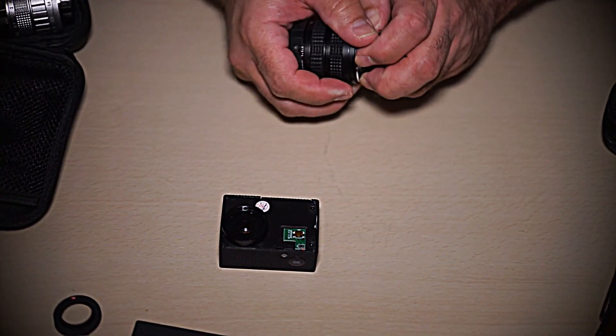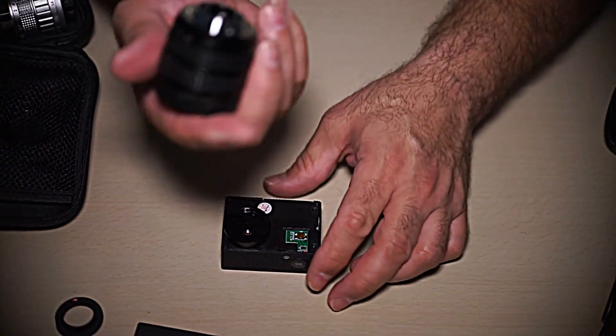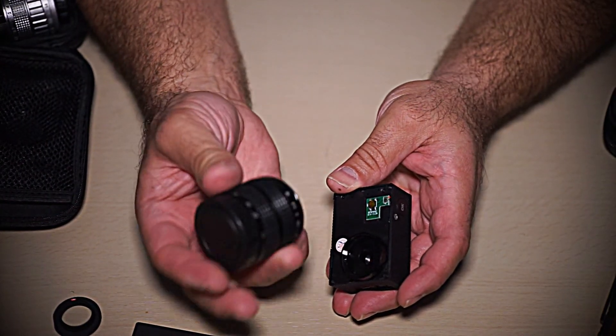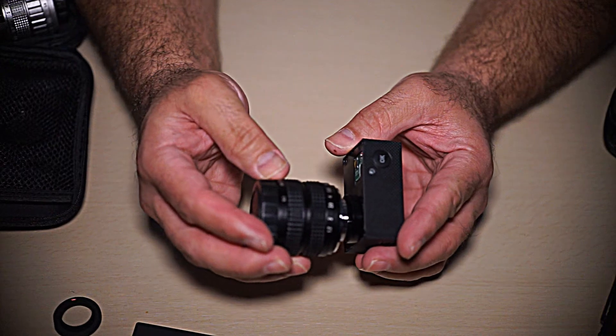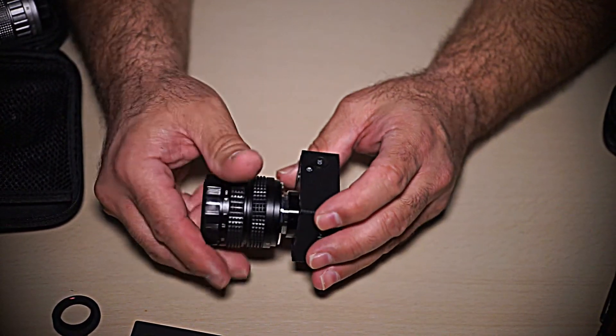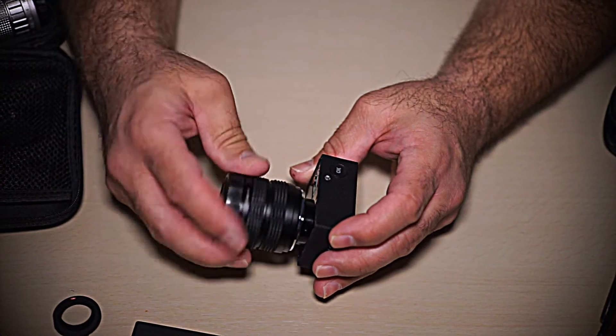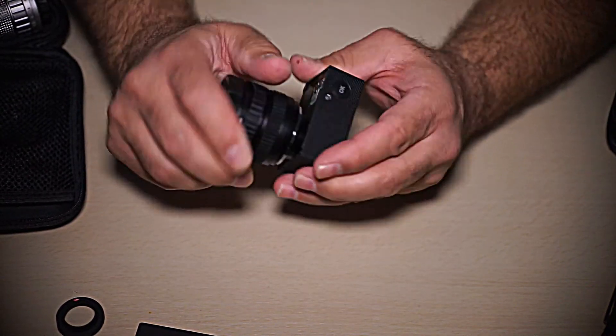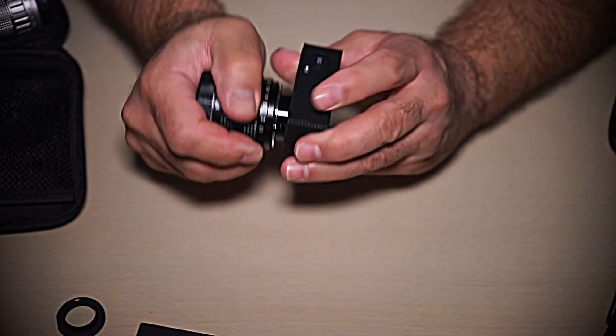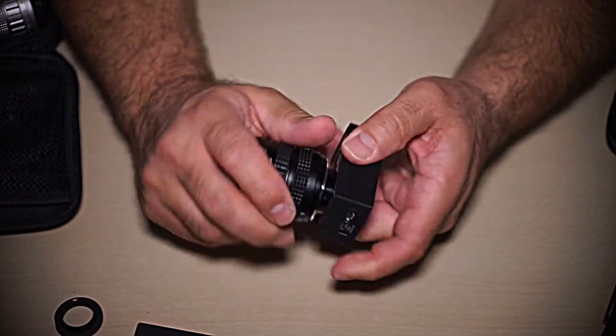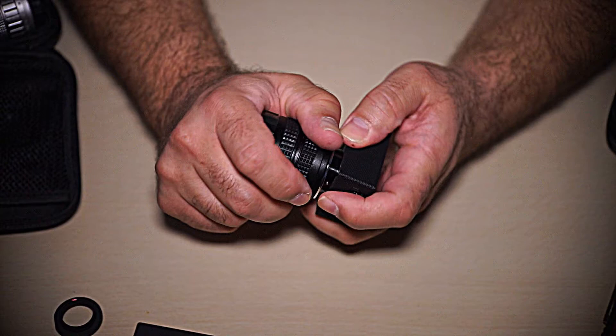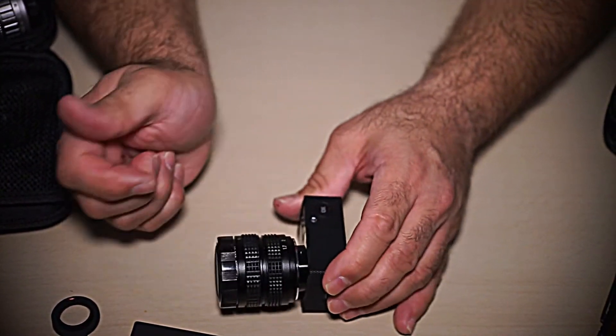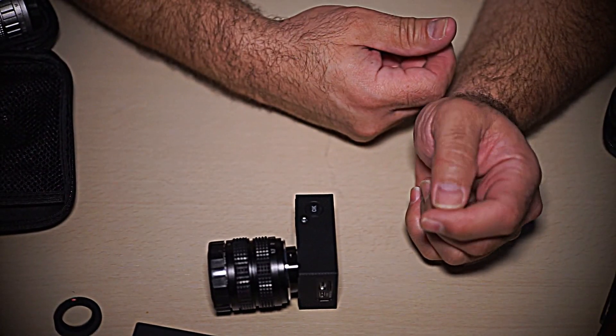Okay, now we take this. Here's our C-mount lens, which is, again, the Fujian 35mm f1.7. And we simply screw that in. That gives us a little more grip to turn it in some more. Hopefully, that'll let us do it. As you can see, it wasn't very difficult.